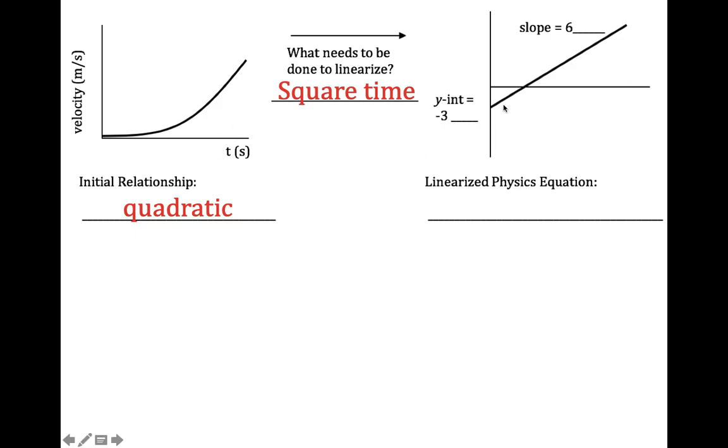So we're going to go over here and this, it's going to turn out to be a straight line. We still have velocity on our y-axis and on the x-axis we no longer have time. We have time squared. You have to write time squared. You have to have the unit squared as well. That's super important.